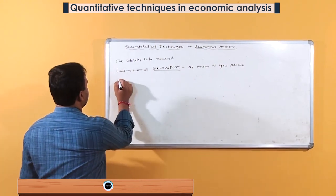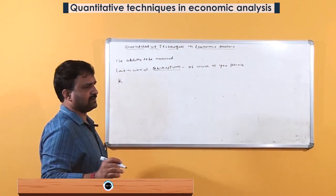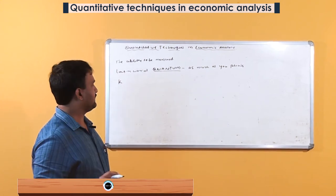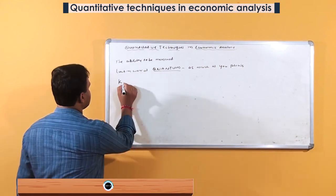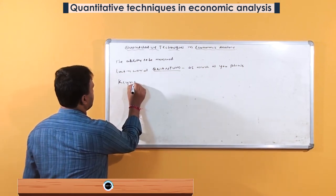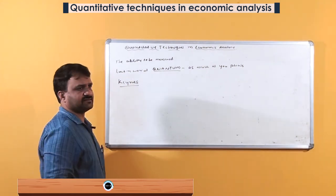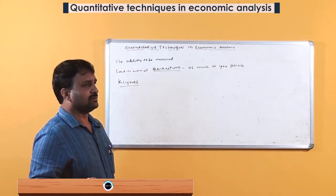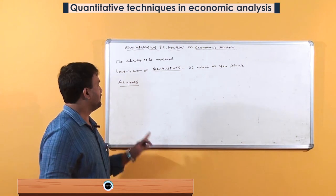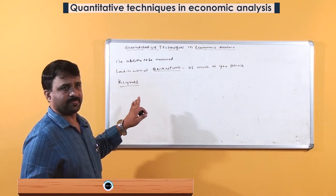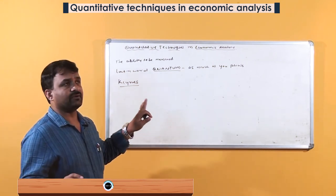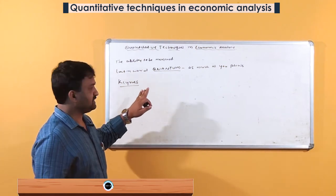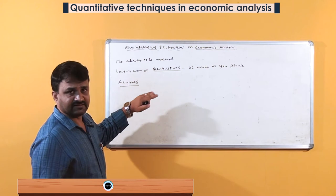We can explain economic theories in a literary manner. For example, Keynes' fundamental law states that when income increases, consumption expenditure of persons also increases, but not at the same rate as the increase in income. This is the theoretical, sentence-based expression of Keynes.